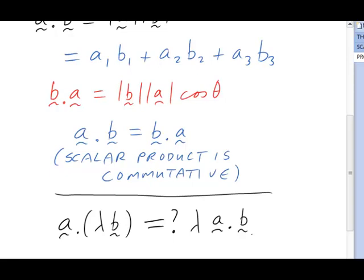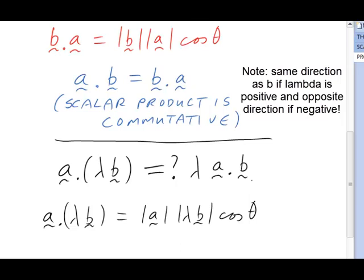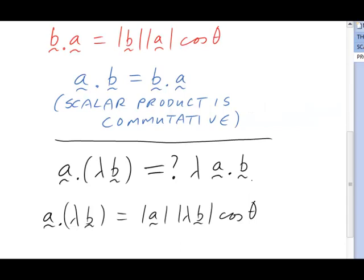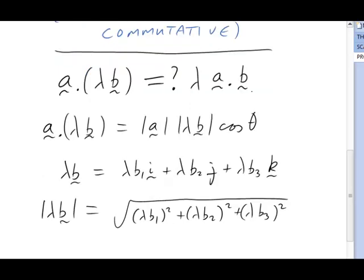We need to go back to the definition again. The definition tells us that the left-hand side is the magnitude of a times the magnitude of lambda b times the cosine of the angle between the vectors. Lambda b is just a multiple of b, so it maintains the same direction as b. That means that the angle theta is the same as before, the same as that between a and b. What about that magnitude lambda b? Well, let's be really pedantic about it and expand it out in terms of the components. There's the vector lambda b. Now we need to take the squares of the components, add them up, and take the square root. Here's the first step.